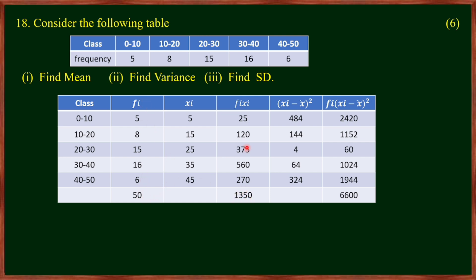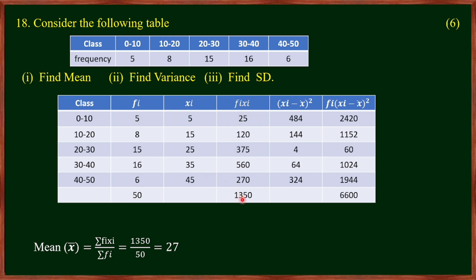We compute the mean using the equation: x̄ = Σ(fi · xi) divided by Σfi.